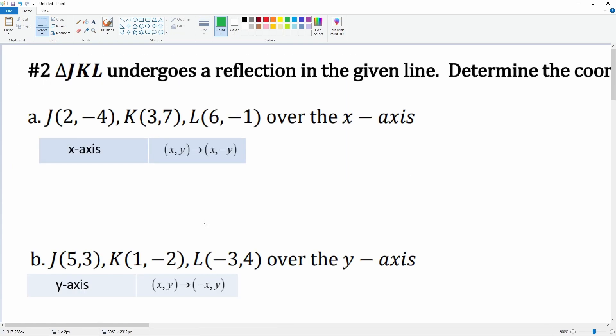All right, so now we can just apply the rules and take a look. Okay, so the first one, let's take a look at J prime. J prime, it looks like all the values are the same but it is just that the y value changes. So this is 2 comma negative 4, but the negative now becomes a positive.